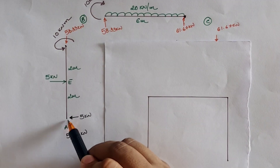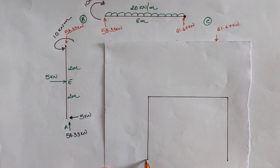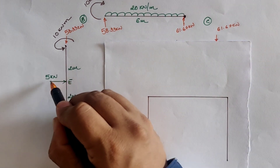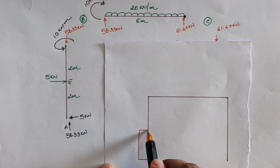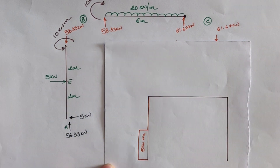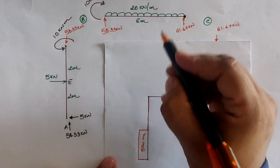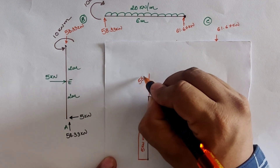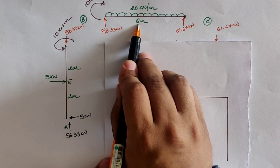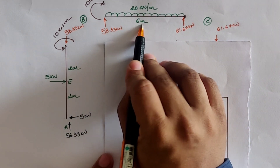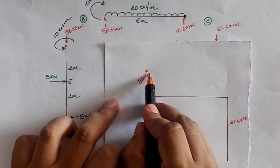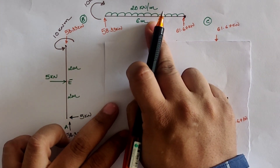For the shear force diagram, at location A there is a five kilo Newton horizontal load, plotted upward. Between A and E there is no load, so we draw a horizontal straight line. At location E the five kilo Newton downward load gives five minus five equals zero. For the BC span, at location B the value is 58.33 kilo Newton positive. From B to C the UDL of 20 kilo Newton per meter acts downward, giving 58.33 minus 20 into six equals negative 61.67 kilo Newton, drawn as an inclined straight line.